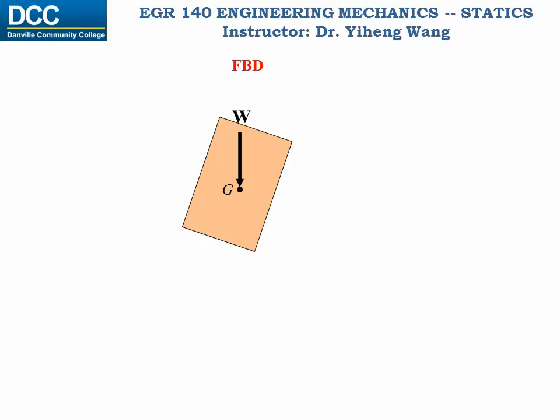Next, we have the normal force acting perpendicular to the contacting surface at point O. Again, the exact location of point O is not important in this problem. And lastly, because the impending motion is sliding down the surface, the frictional force is tangent to the contacting surface and directed opposite to the impending motion.